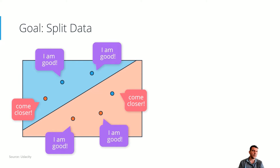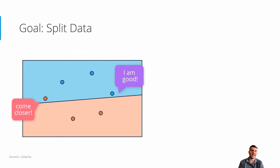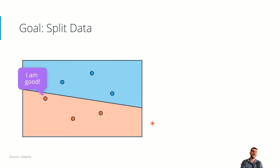Let's say we managed to find a way to do this. We will first get the line closer to the blue point, and then the blue point will say it's good. Now the red point still says come closer, so we make another step. Hopefully we get something where all points now say they're good.